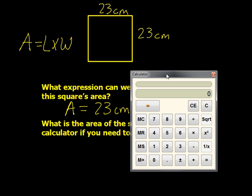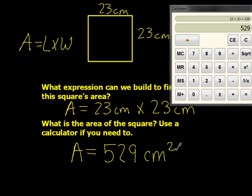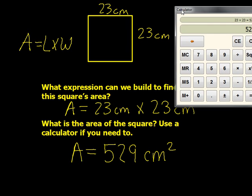So here's my calculator, I'm going to punch in 23 times 23 equals, and I end up with my answer of 529, so I can write area equals 529 centimeters squared. And you could also write that as square centimeters.